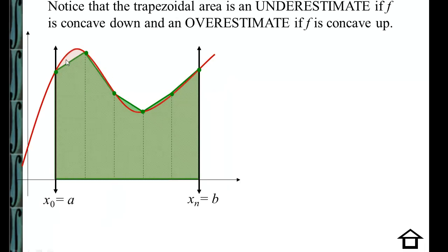The trapezoidal area will be an underestimate if f is concave down — notice f is frowning here. And it will be an overestimate; in other words, the trapezoid will be too large if the original function f is concave up.